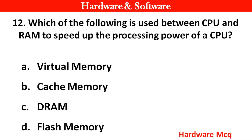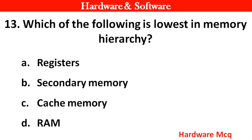Question 12: Which of the following is used between CPU and RAM to speed up the processing power of a CPU? Right answer is option B — Cache memory.